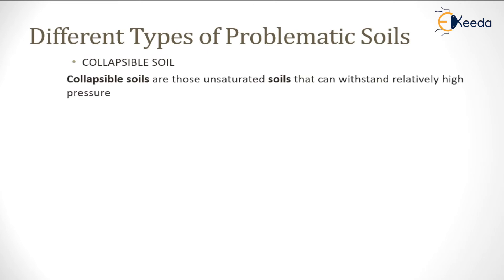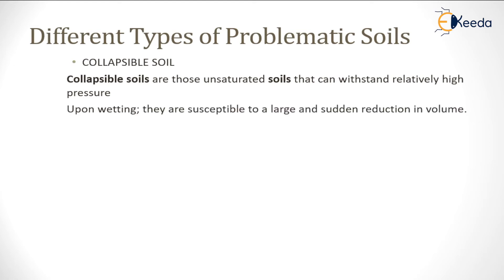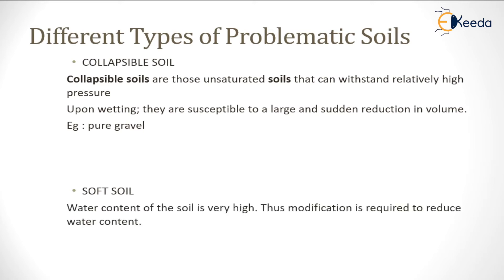Next is collapsible soil. As the name indicates, it collapses when it becomes saturated. When dry or unsaturated, it is able to withstand high pressure, but once it is wetted or saturated it falls down and causes damage to the building. An example is pure gravel.